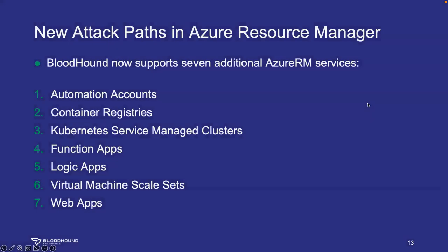We now support attack paths that traverse seven different Azure RM services: automation accounts, container registries, Azure Kubernetes Service managed clusters, function apps, logic apps, virtual machine scale sets, and web apps. Web apps and function apps are technically from the same provider in Azure, but they work differently enough that it warrants modeling them as distinct types of objects.